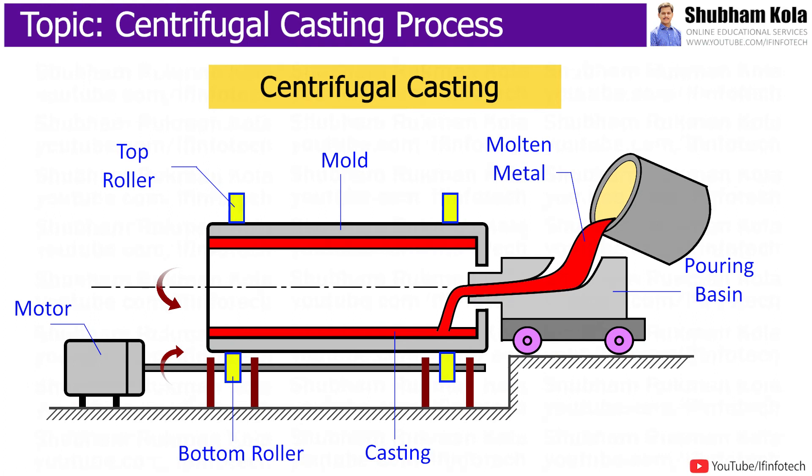In today's session, we learn about the centrifugal casting process, which is used to cast components of high material roundness. This casting technology is used for applications like jet engine compressor cases, hydro wear rings, many military products, and other high reliability applications.